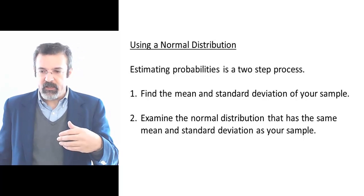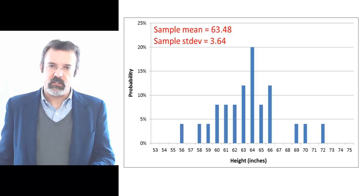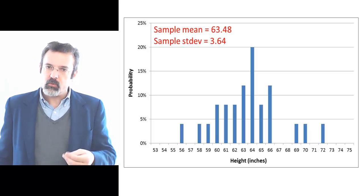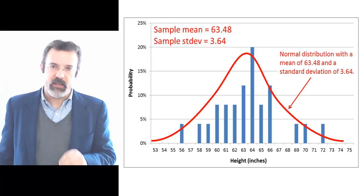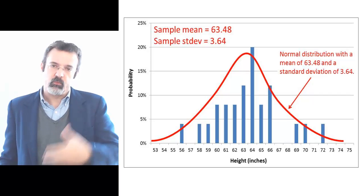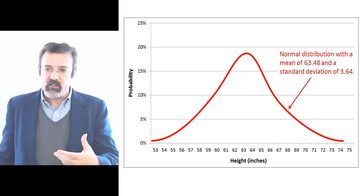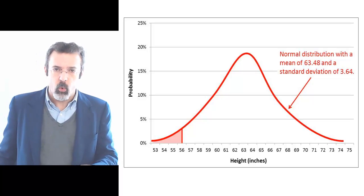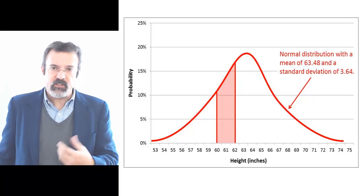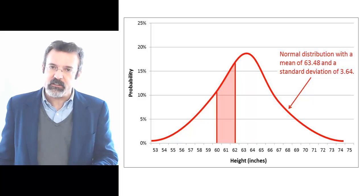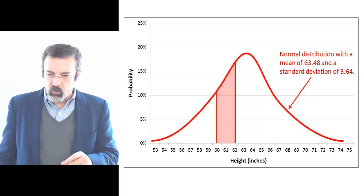For example, we might have a sample of data that looks like this. We calculate the sample mean and the sample standard deviation, which tells us what the normal distribution looks like that most closely approximates this data. We can then remove the data and focus on this normal distribution, asking questions like what is the area to the left of a certain point, to the right of a certain point, or within a certain range. These areas are our estimates of the probabilities of the random variable taking on certain values.